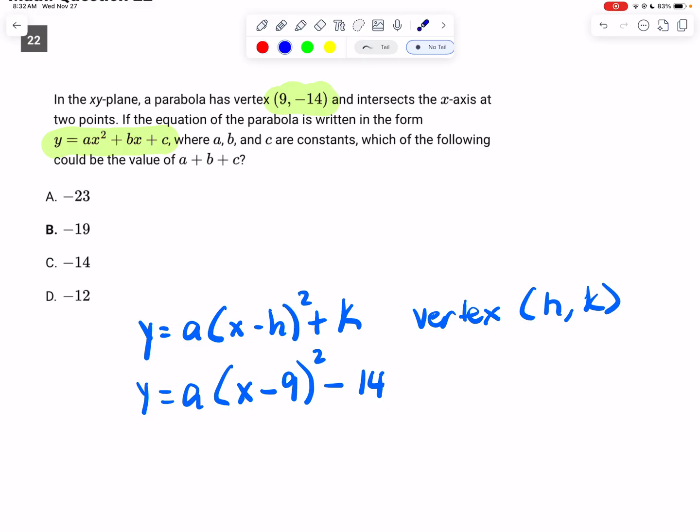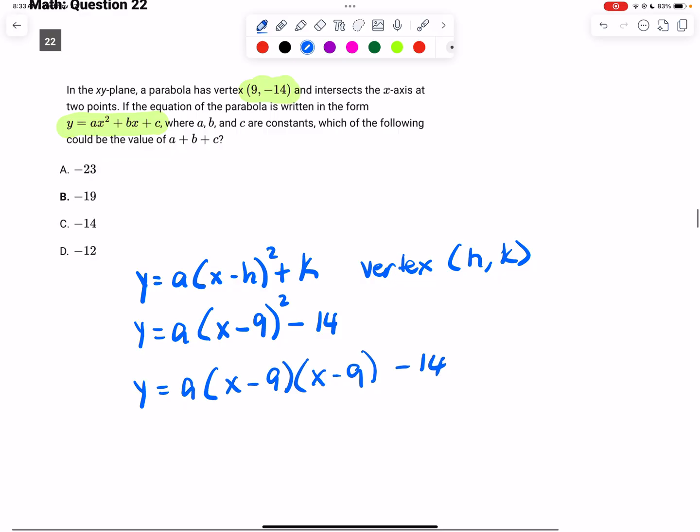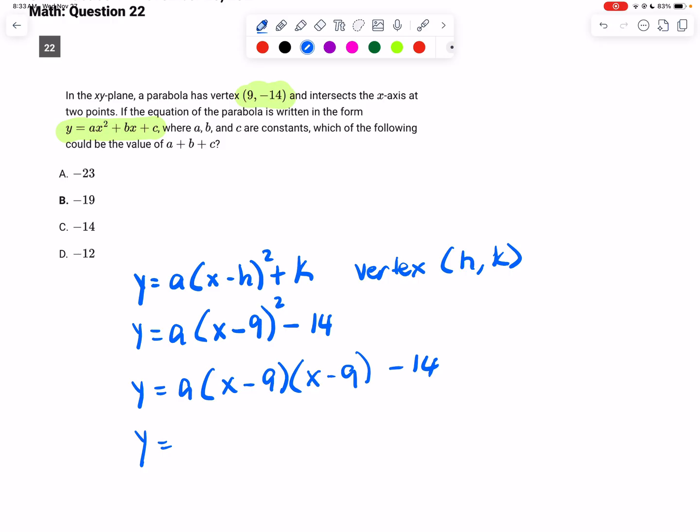Alright, so the first thing that we want to do here to simplify is expand our function right here, this part of the function. So I have y equals a, and that's really x minus 9 times x minus 9 minus 14. Now, if you've been practicing expanding things like this, you probably know that you did not have to do this step. You could have gone straight to the step of a times x squared minus 18x plus 81. And so I just foiled that, skipped a couple things there. Hopefully I did not lose you in the process.